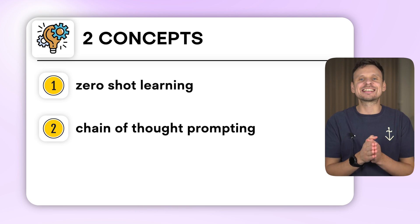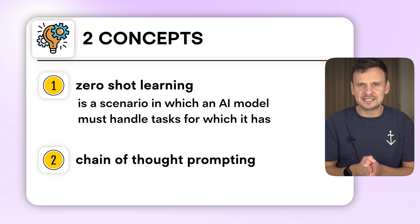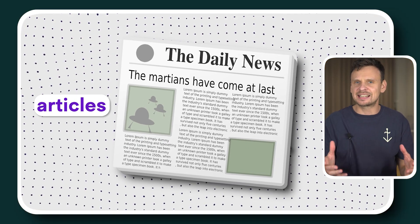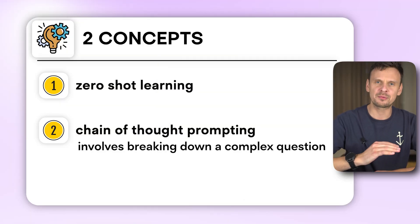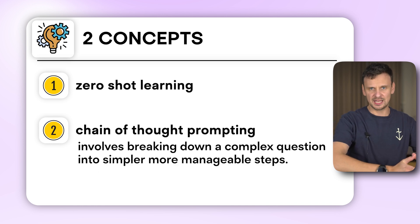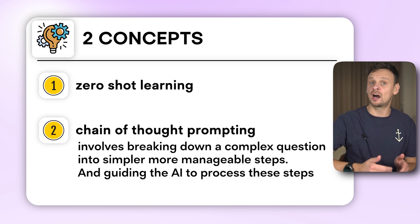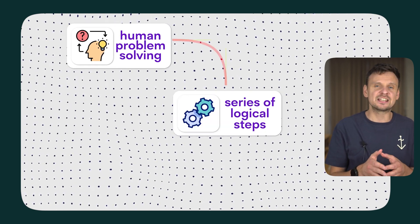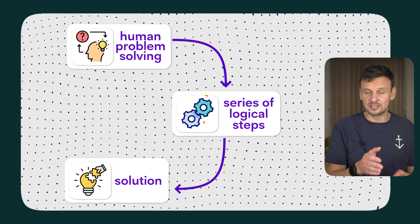Zero-shot learning is a scenario in which an AI model must handle tasks for which it has no direct training. For instance, if a model trained on text from books and articles is suddenly asked about a niche scientific discovery it never encountered during training, the model is in a zero-shot learning situation. Chain of thought prompting involves breaking down a complex question into simpler, more manageable steps and guiding the AI to process these steps sequentially, mimicking human problem solving.